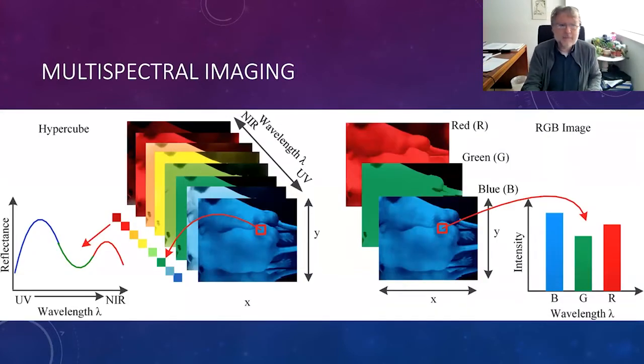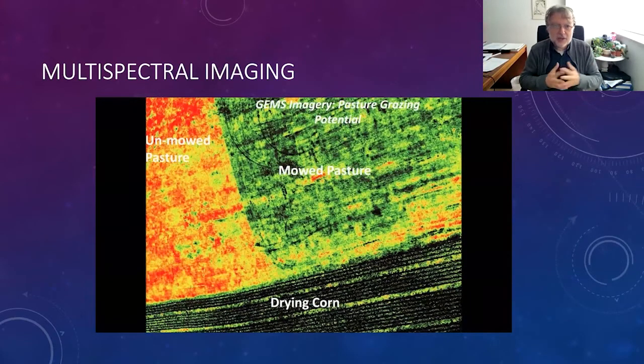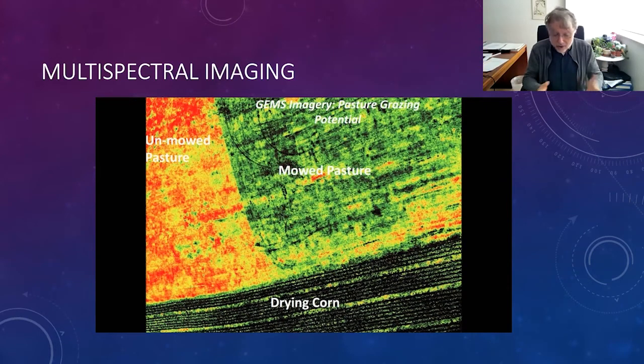Another example is multi-spectral or hyperspectral satellite images. They are all multi-spectral, but the multiple dimensions are different. And both of them are essentially three-dimensional entities, lots of two-dimensional images. But we usually combine them to come up with a two-dimensional overall representation. For example, for satellite images, this is the interpretation, where the left top corresponds to the unmoved posture, and the bottom is the drying corn. So this is two-dimensional interpretation.